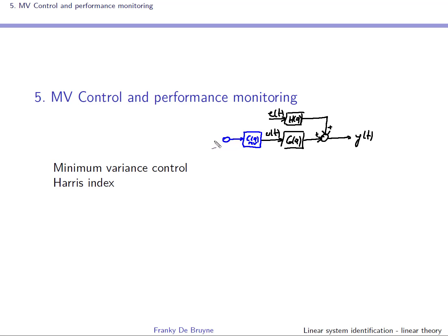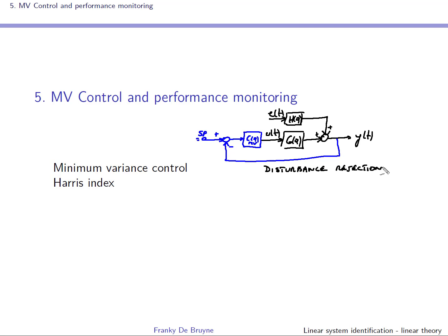This controller will select the input in order to have the output variance as small as possible. Of course, we'll use feedback. We'll take a setpoint here, and without loss of generality, we'll say the setpoint is equal to zero. So we are really looking at disturbance rejection that must be optimal — this is really constructing a minimum variance control. So we have a kind of benchmark.